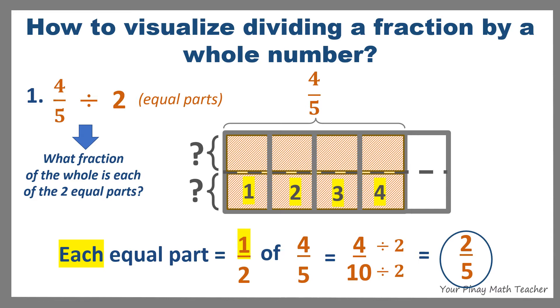Another way of getting 4 tenths is to find the value of 1 half of 4 fifths by multiplying 1 by 4 to get 4 and 2 by 5 to get 10. And then again, reducing by 2, you will still get the same answer as 2 fifths.